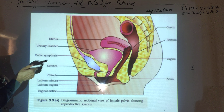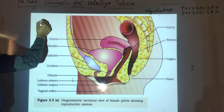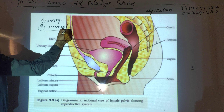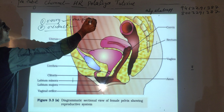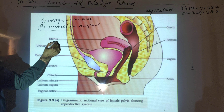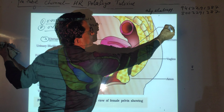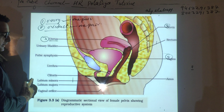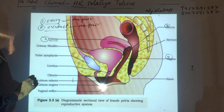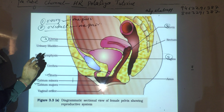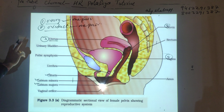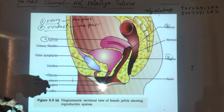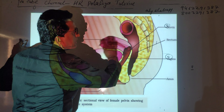This female reproductive structure diagram is given in your NCERT textbook. The ovary is the first part. The ovary opens via the oviduct or fallopian tube into the uterus. The uterus opens into the cervix, cervix opens into the vagina, and the vagina opens outside into the external genitalia — labia minora, labia majora, clitoris, and hymen membrane.